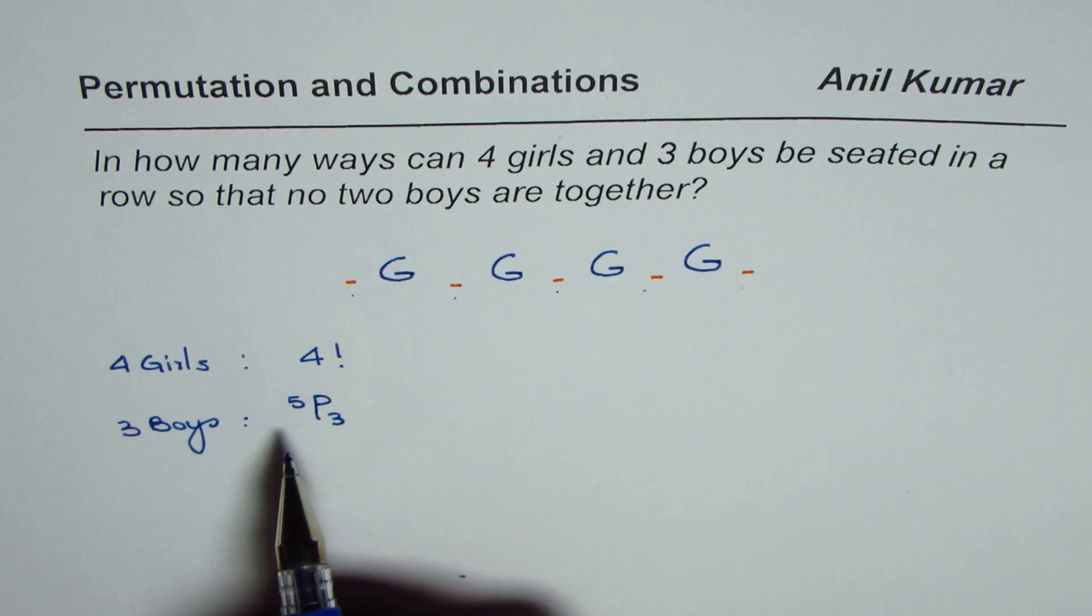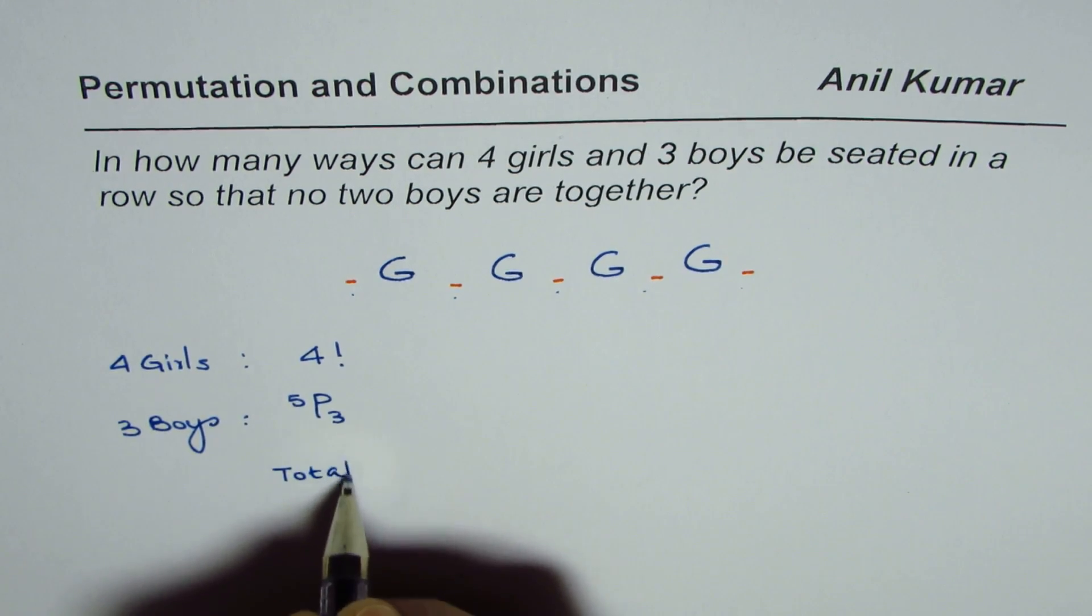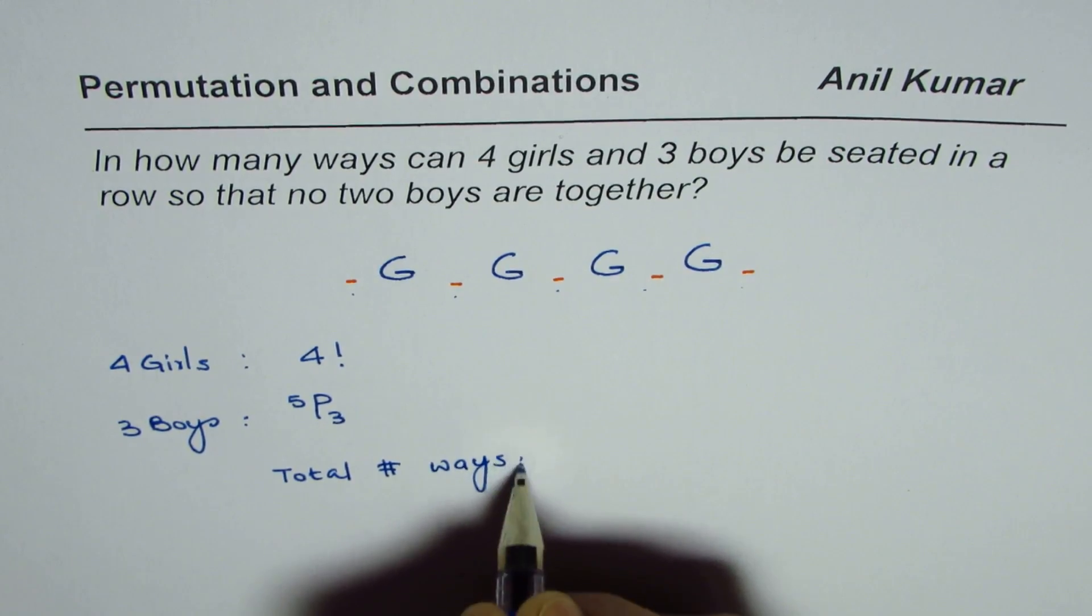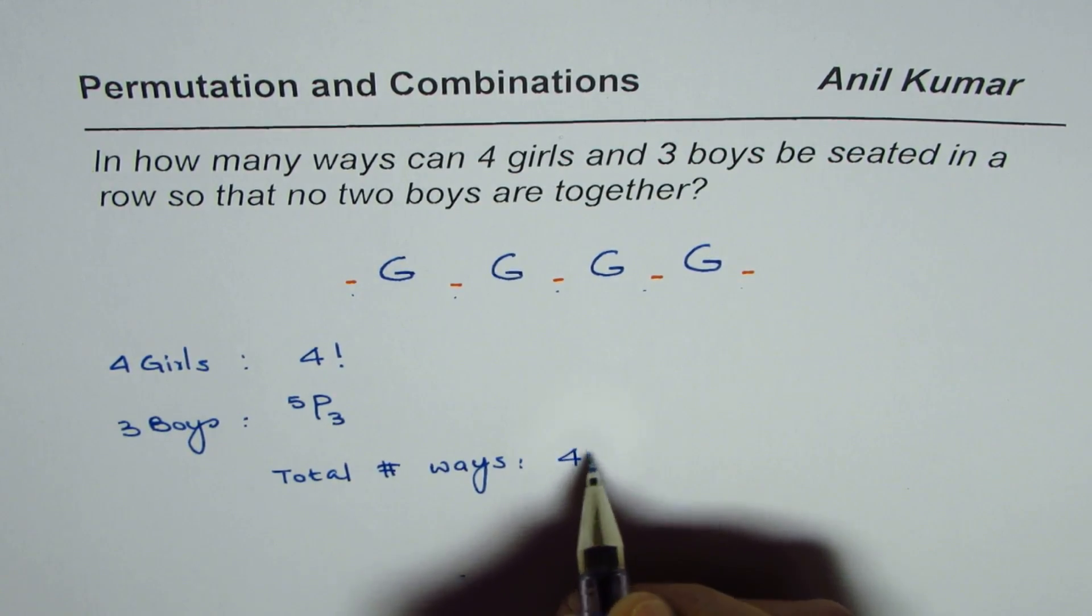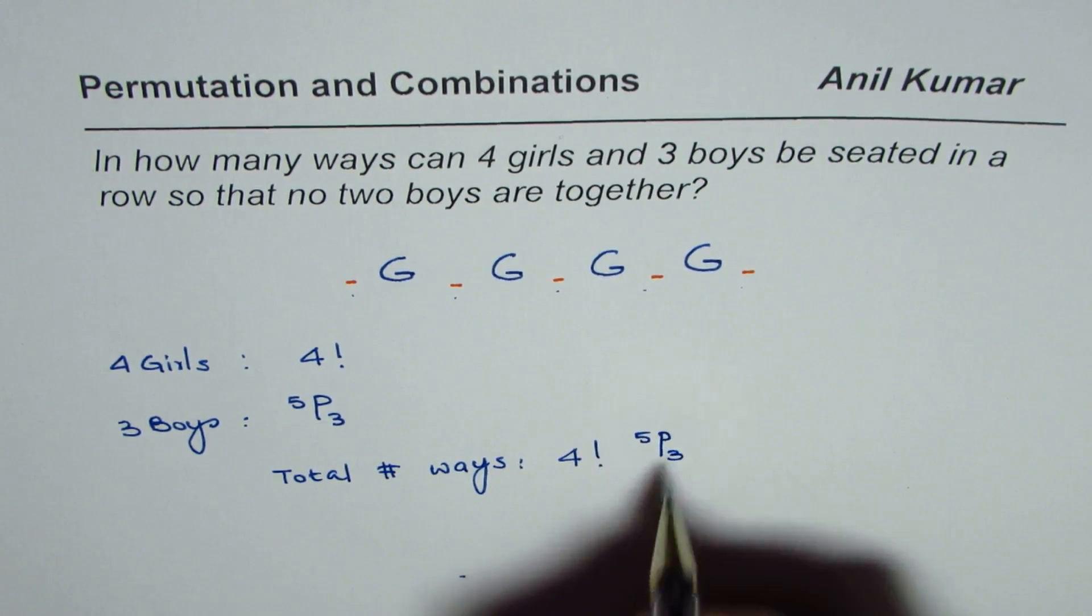Now from the fundamental rules, we can find that the total number of ways will be the product of these two, that is four factorial times 5P3.